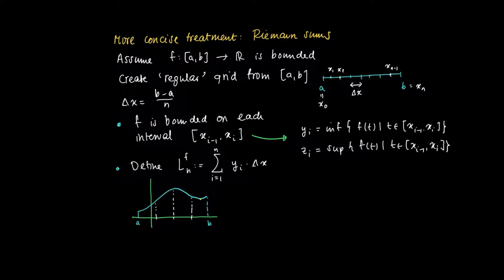So suppose here we have the graph of the function. Then we have one, two, three, four intervals, and from each interval we pick the infimum. In this case we have a continuous function, so these infima are minima, and then we just add up the rectangles so defined. So L_n(f) is a lower estimate for the surface area, if you will.